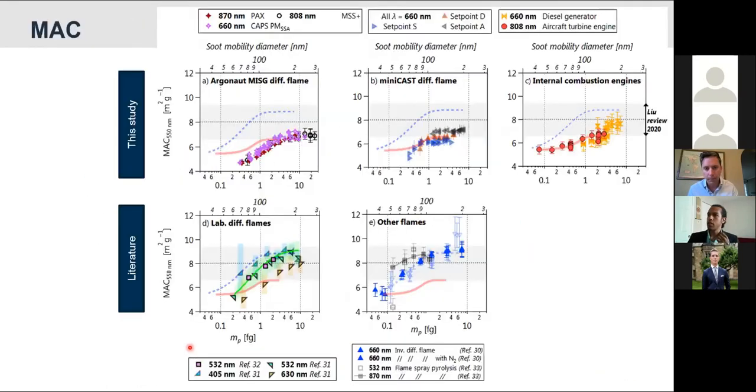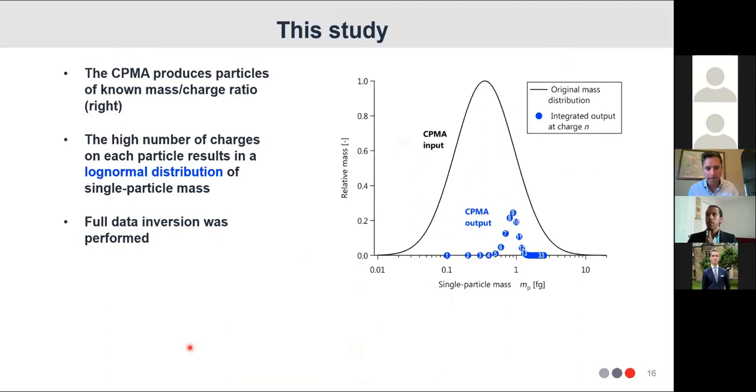That comes back to this depiction here. So when we think about multiple charges as aerosol scientists, we usually are familiar with a bipolar charger followed by a DMA, for example. And then you would have a few charges. So you'd have one, two, three. And here, that would produce some confusion if you had a log normal distribution centered around each of those. But after the CPMA, after the corona charger CPMA, we have so many charges that if you consider a log normal distribution centered around each of these numbers, it just overlays to produce another log normal distribution. So it's not a problem in our setup.